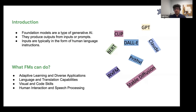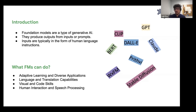Foundation models are a type of generative AI that produce outputs from inputs or prompts, where inputs are typically in the form of human language instructions. What foundation models can do includes adaptive learning, diverse applications, language and translation capabilities, visual and coding skills, human interaction, speech processing, and classification. The list of foundation models is heavily dominant in the language domain, with fewer in vision. For satellite and reanalysis data they are minimal — you have CLIP, GPT, Claude, DALL-E and stable diffusion for vision, and then Prithvi for satellite imagery and Weather FM for reanalysis weather variables.